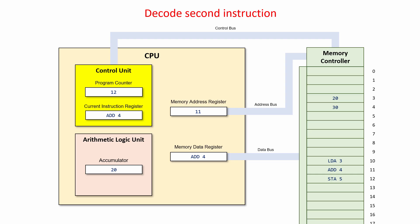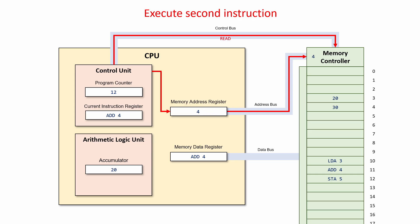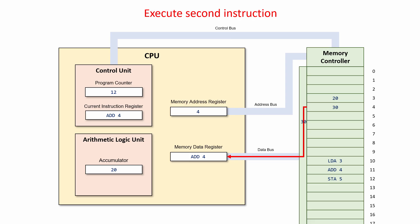The new current instruction can now be decoded — the control unit will engage whatever circuitry is needed to carry it out. This instruction will add the contents of memory location 4 to whatever's in the accumulator, so the memory needs to be read again. The memory address 4 is put into the memory address register and sent to the memory controller via the address bus. A read instruction is issued and the contents of location 4 — the number 30 — is copied to the memory data register. The number 30 is then passed to the arithmetic and logic unit, which switches on the appropriate circuitry to add it to the value already in the accumulator.